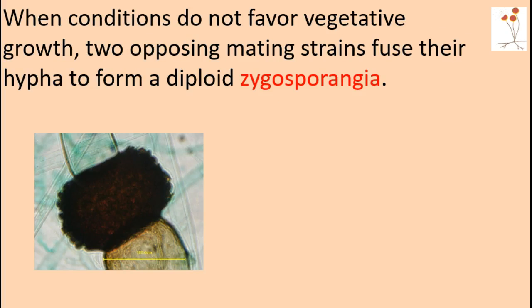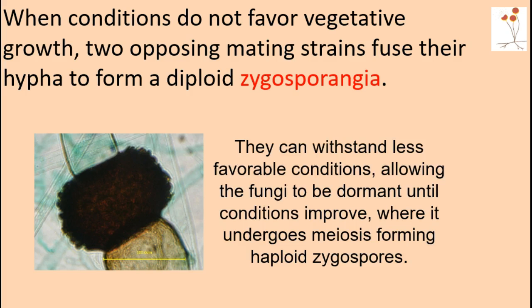When conditions are not as favorable — for example, not enough nutrients or the temperature is outside the right range — two hyphae of opposing mating strains will come together, fuse, and conjugate, hence the name conjugating fungi. They form a zygosporangia. I'm showing you a picture of a zygosporangia — a thick-walled structure that forms between these two hyphae of opposing mating strains, and inside will be the zygospores. These zygosporangia are important because they can withstand less favorable conditions, allowing the fungi to remain dormant until conditions improve and more nutrients are available, at which point they undergo meiosis. Inside that zygosporangia, haploid zygospores form, and those zygospores can then germinate and form more fungi.